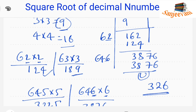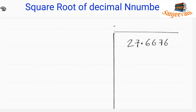Now I am explaining the square root of a decimal number: 27.6676. For this, we also pair the digits first. Before the decimal point we pair from the units place going left as usual. After the decimal point we pair in the opposite direction going right. So we get the pairs: 27, 66, and 76.